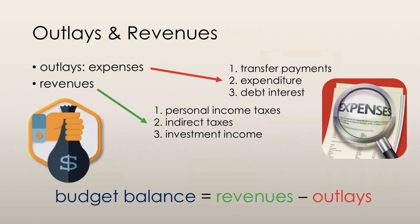Outlays are the expenses that the government undertakes. These include expenses on transfer payments, general government expenditure on goods and services, and paying off debt interest on borrowed money. The largest of these is transfer payments, which entails welfare payments, subsidies, grants, international aid, and dues to the United Nations.